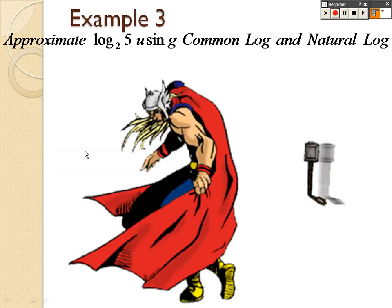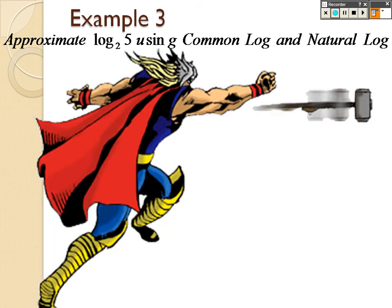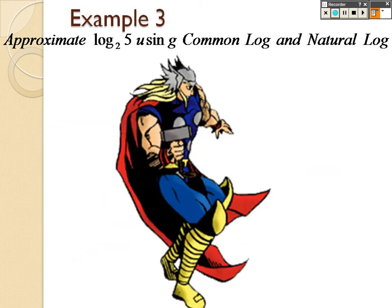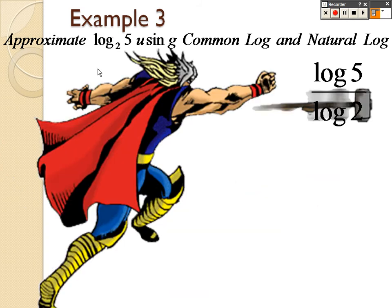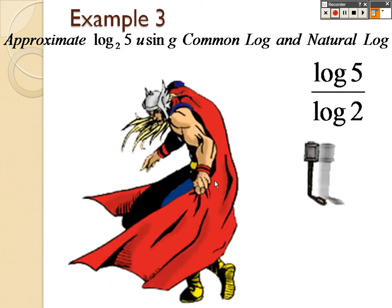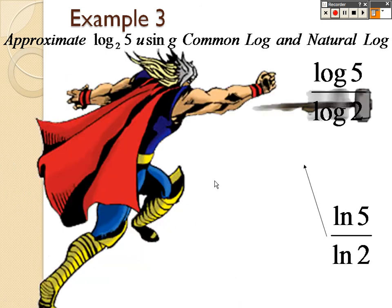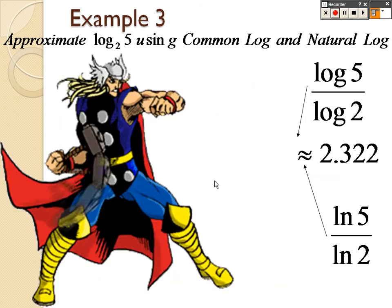Example three, approximate log base 2 of 5 using common logs and natural logs. Remember you'd write that as log 5 over log 2, or you could do natural log of 5 over natural log of 2. Either or are both going to give you about 2.322 as your answer.